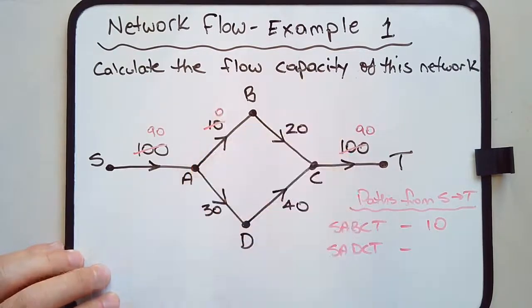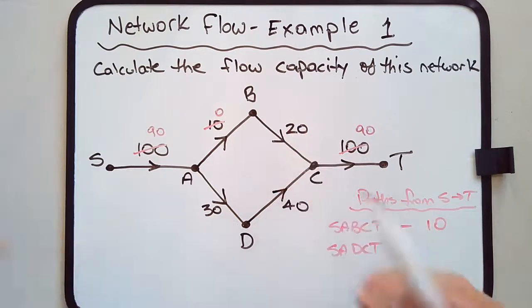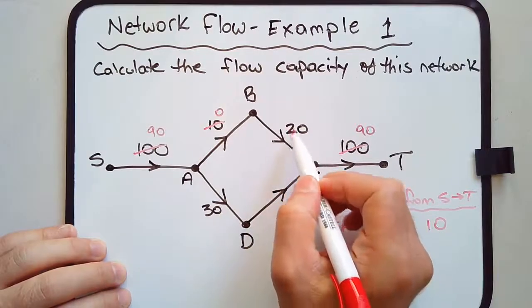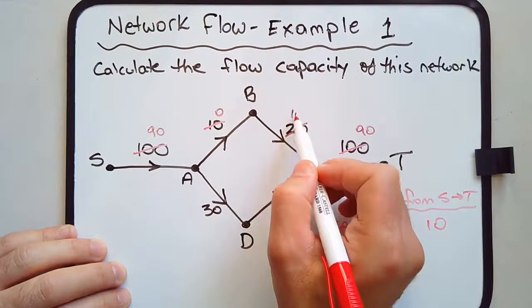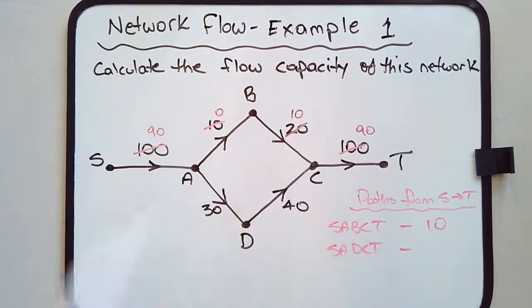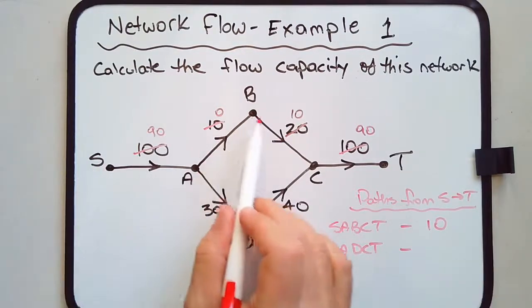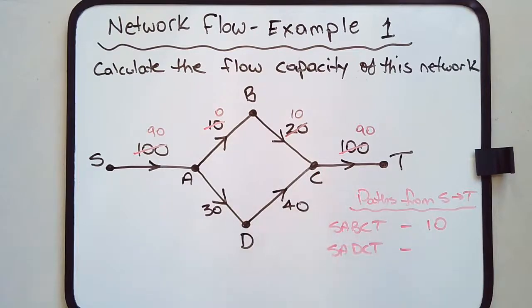AB is now fully saturated. We don't have any more capacity left in AB. Capacity, in this context, means how much is left that can carry more water. BC had a capacity of 20. We're now flowing 10 litres into that, so we now have a capacity of 10. This path cannot flow any more.